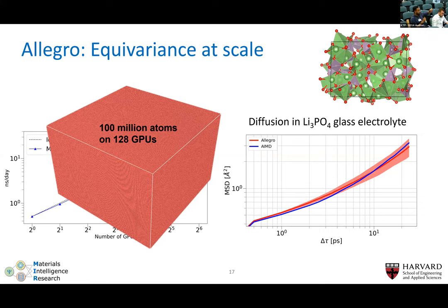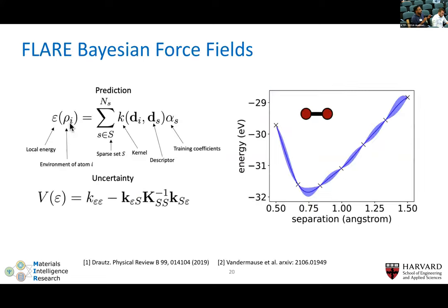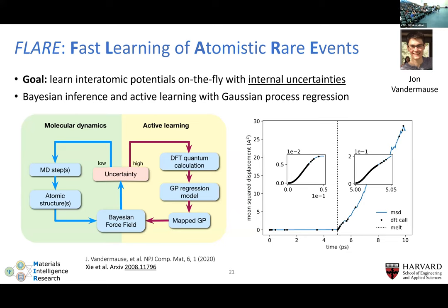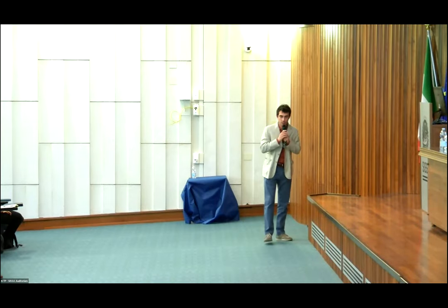The figure I showed compared Allegro trajectories to ab initio MD for lithium phosphate — the red curves match the blue ab initio curves very well. Once you've trained the model appropriately, you can run much faster simulations and compute diffusion coefficients. [Audience]: In your active learning slide, did you benchmark against random sampling instead of uncertainty-based selection? [Boris]: Yes, there's a comparison in the npj Computational Materials paper introducing FLARE. You do see an efficiency gain with active learning, though it's system-dependent — for homogeneous liquids, random sampling works similarly, but for systems with rare events driving the dynamics, active learning provides clear benefit.